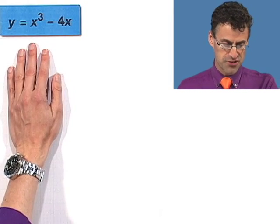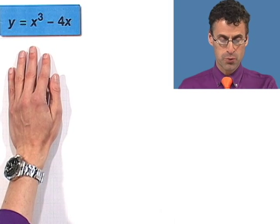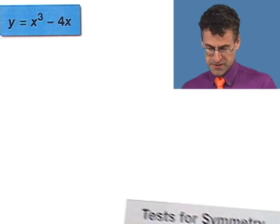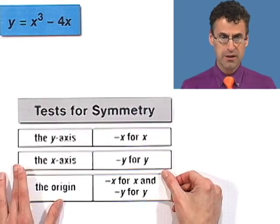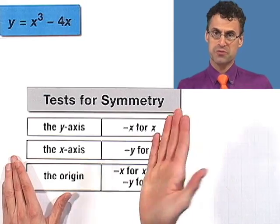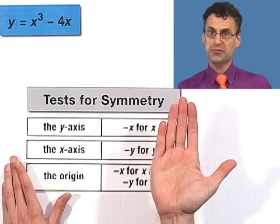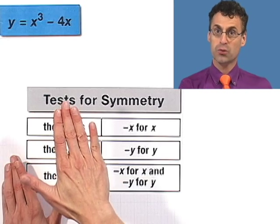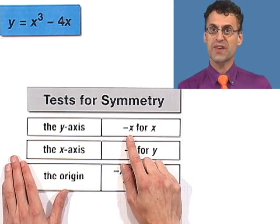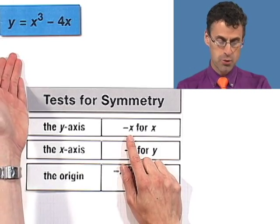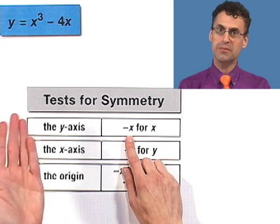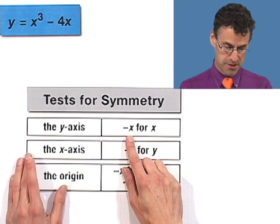I want us to graph y equals x cubed minus 4x. Let me quickly remind you of the different types of symmetry. The first type is symmetry with respect to the y-axis, which means that what happens on the left of the y-axis also happens correspondingly on the right. You check for that by replacing all the x's with negative x's and seeing if you get the exact same equation.